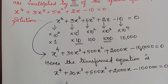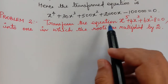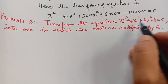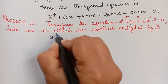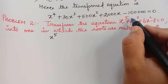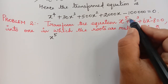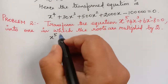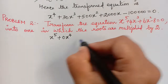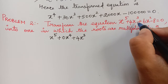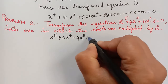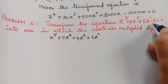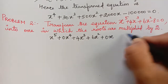Hope you have understood this problem. We will do another one. Here the question is: transform the equation into one in which the roots are multiplied by 2. The equation is x power 5, and the next term is x cube — notice x power 4 is missing, so we write its coefficient as 0: x⁵ + 0x⁴ + 4x³ + 6x² + 0x − 8 = 0. We must not miss any powers of x.